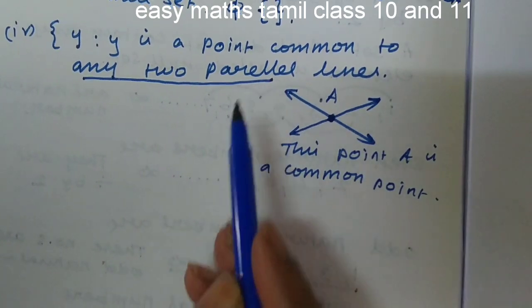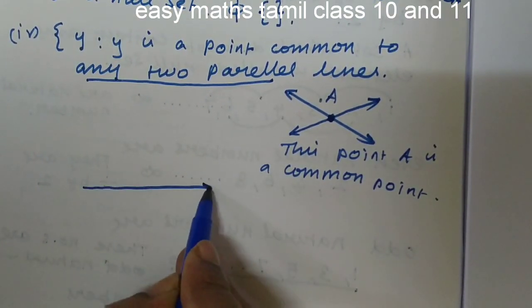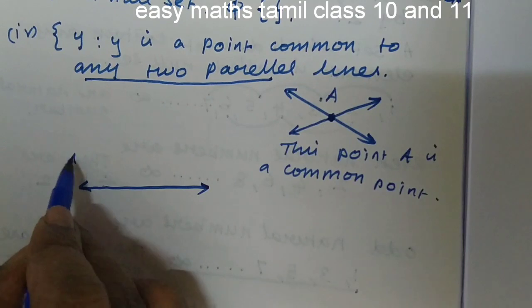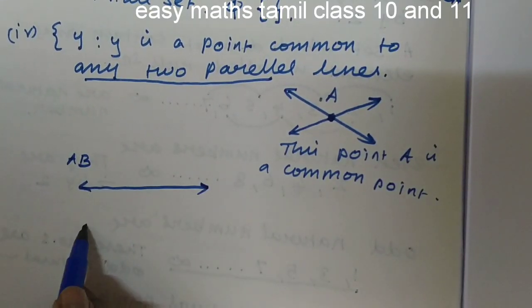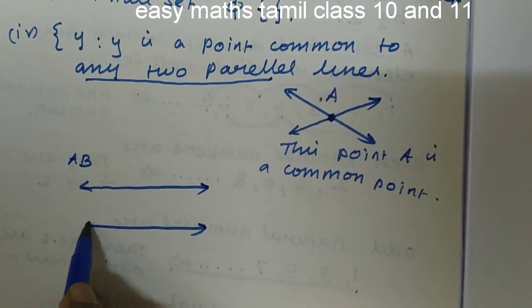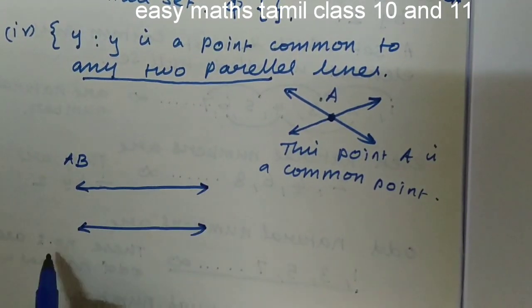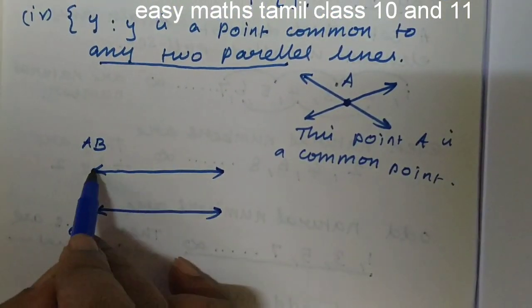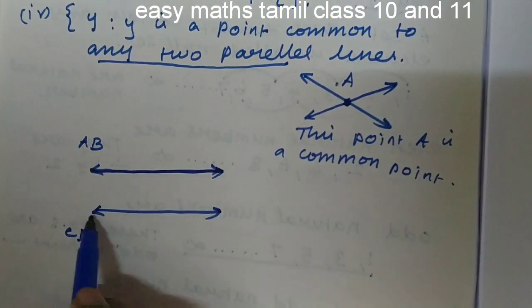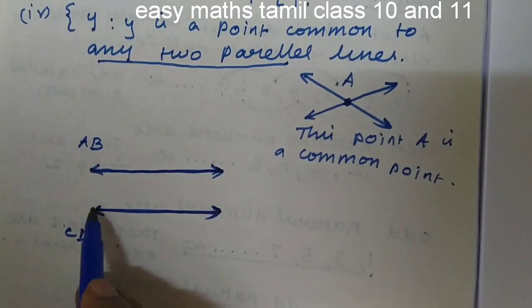Two parallel lines means, suppose AB is a line and CD is another line. As they are parallel lines, they never intersect each other.